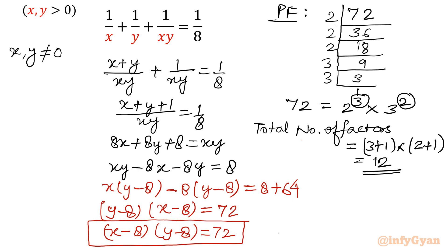Let me write (x-8)(y-8) = 72. Now let's find out factors. So I will write 72 times 1, 36 times 2, 24 times 3.